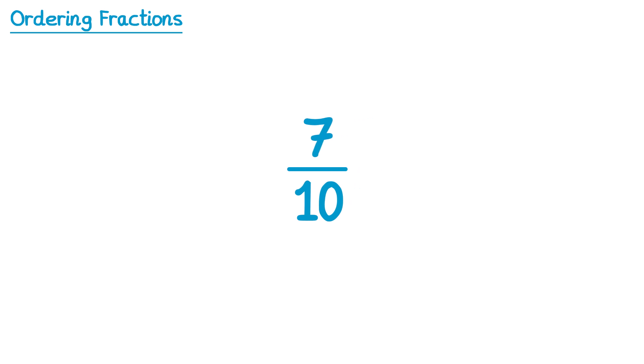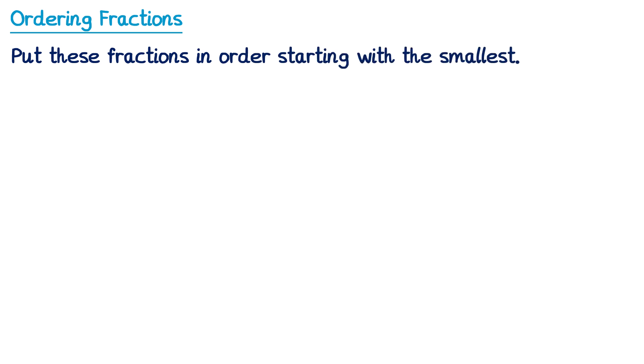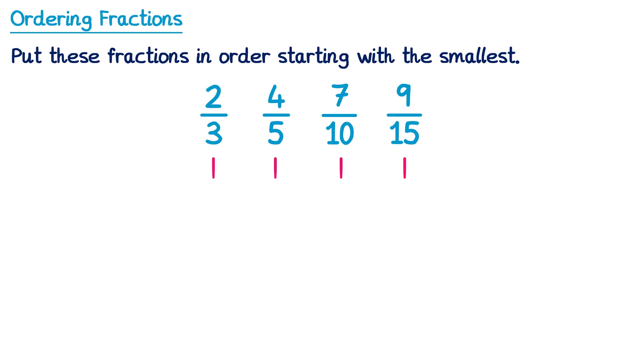We can also use this process to order many different fractions. Let's look at how exam questions are usually written. This question says: put these fractions in order starting with the smallest. What we want to do is rewrite all of these fractions so they have the same denominator — a common multiple of all 4 denominators: 3, 5, 10, and 15. My advice is to always look at the greatest denominator you have and write out that number's times table: 15, 30, 45, 60, and so on.